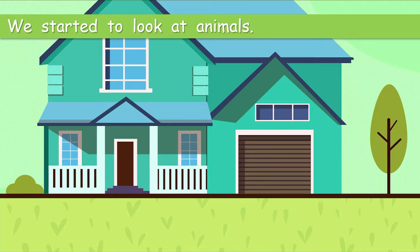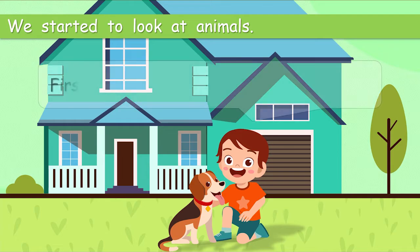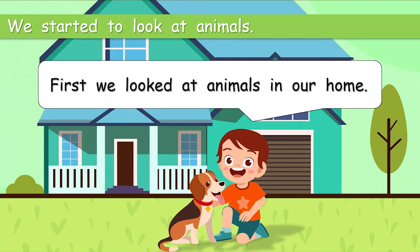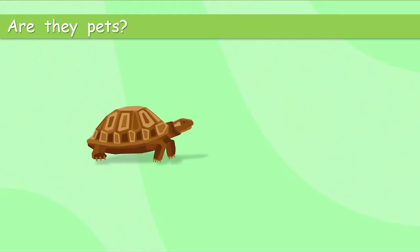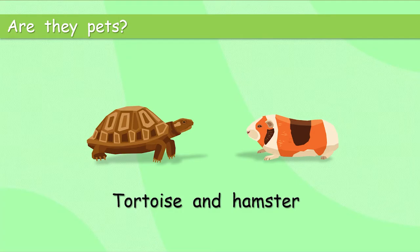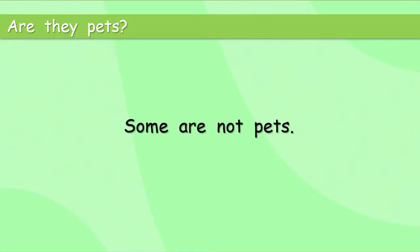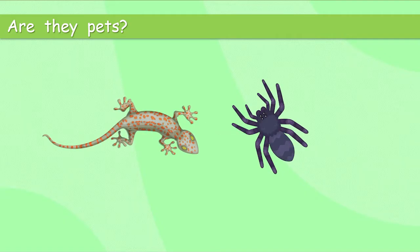Then we started to look at animals. I love animals. First, we looked at animals in our home. Good question. Are they pets? Well, some are pets. Tortoise and hamster. They are both pets, aren't they? Some are not pets. Gecko and spider. Well, actually, I like both of these because both of these animals like to eat mosquitoes. And mosquitoes are bad. So thank you, Mr. Gecko and thank you, Mr. Spider. But they're not pets.